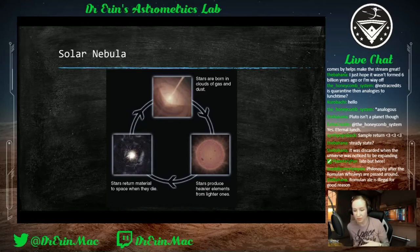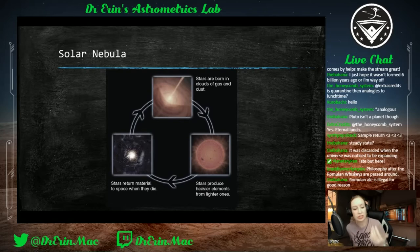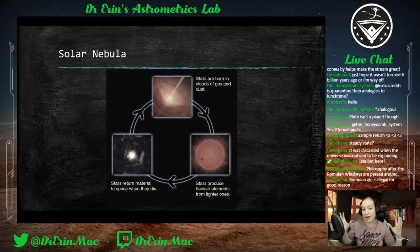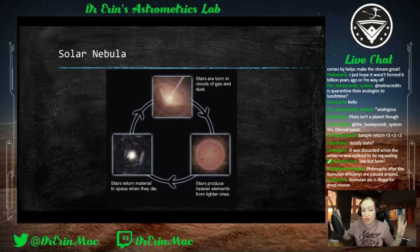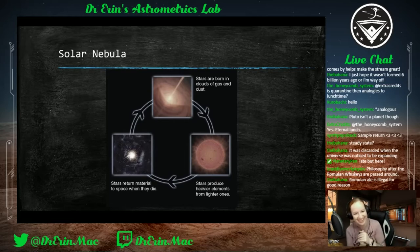The solar nebula — 'nebula' just means cloud in Latin — refers to the cloud from which our star system formed. It's a cyclical process: stars and star systems are born out of clouds of gas and dust, fusing hydrogen into helium and heavier elements. Once a star reaches the end of its life it either fizzles out or supernovas, returning all that material back to space, which then feeds into other clouds that form new star systems — like the circle of life.